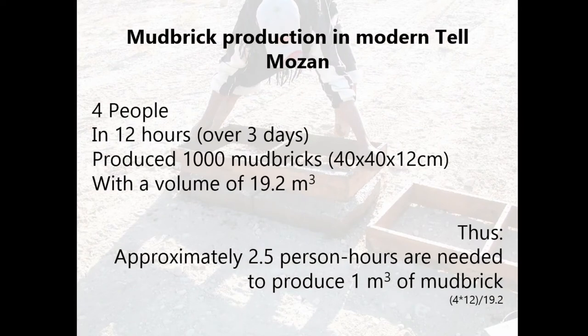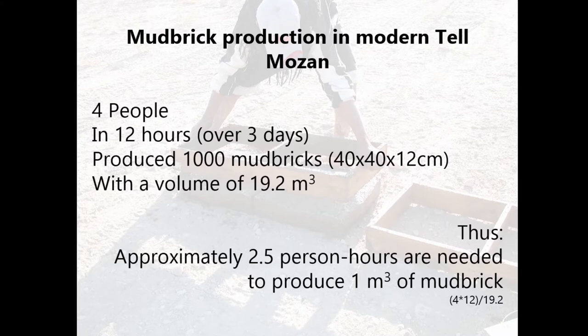We can quantify this having worked hand in hand — archaeologists with local masons. Modern village architecture in the area is also comprised of mud bricks, so the technique is known, even if some elements differ, particularly brick sizes. We were able to make a brick form corresponding to the ancient bricks. The result: four people in 12 hours over three days produced 1,000 mud bricks of a certain size with a volume of 19 cubic meters. Thus, approximately 2.5 person-hours are needed to produce one cubic meter of brick.